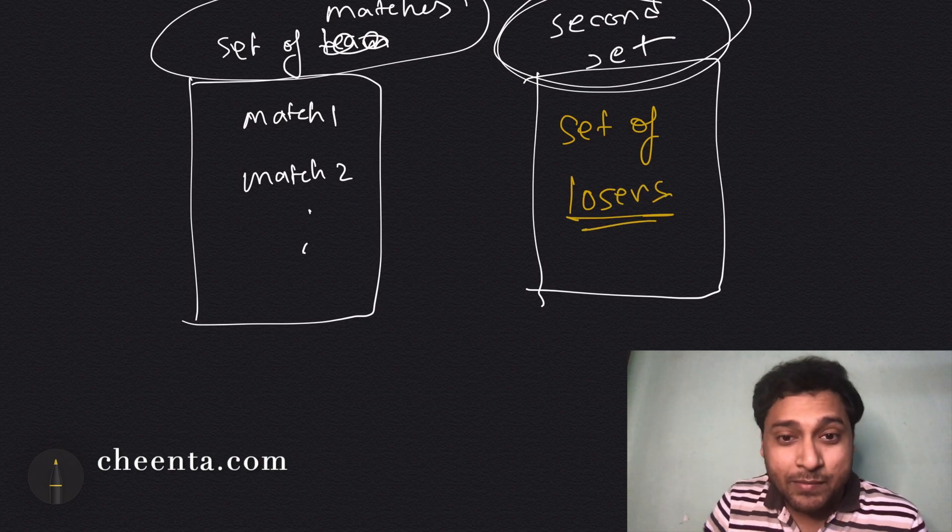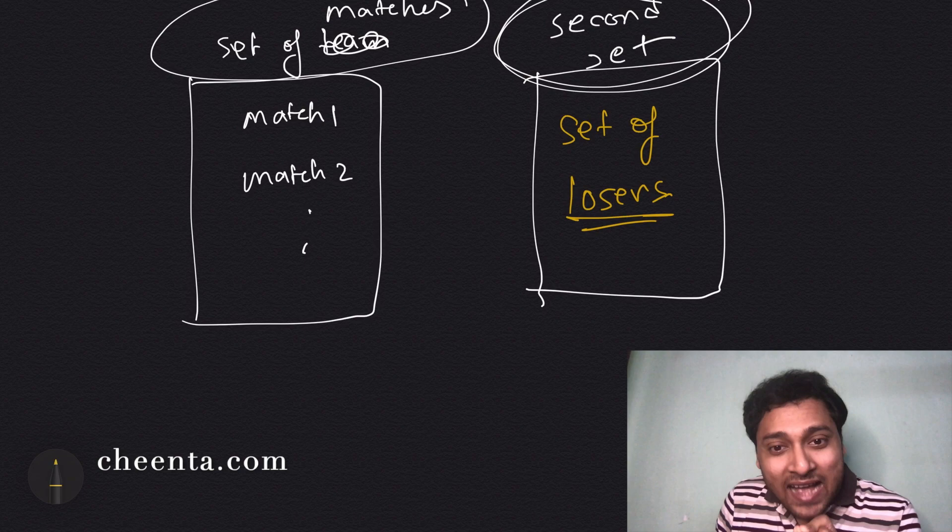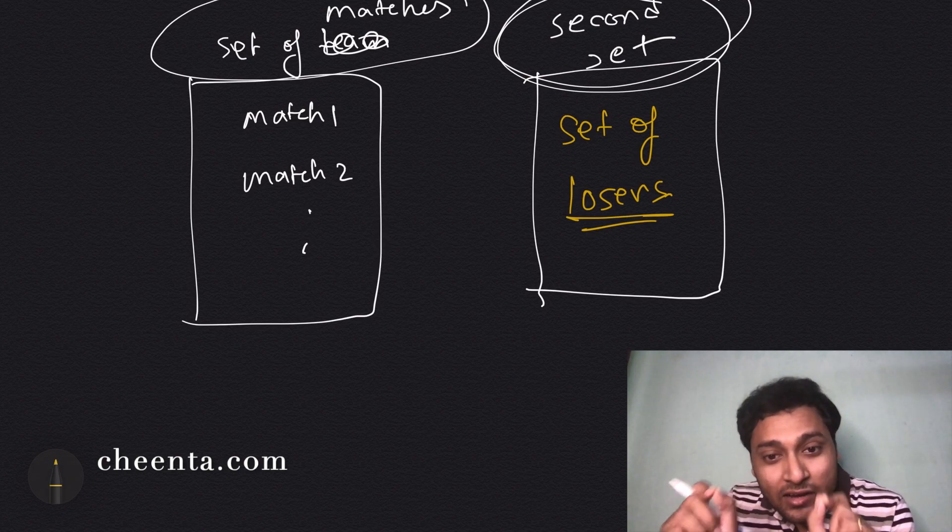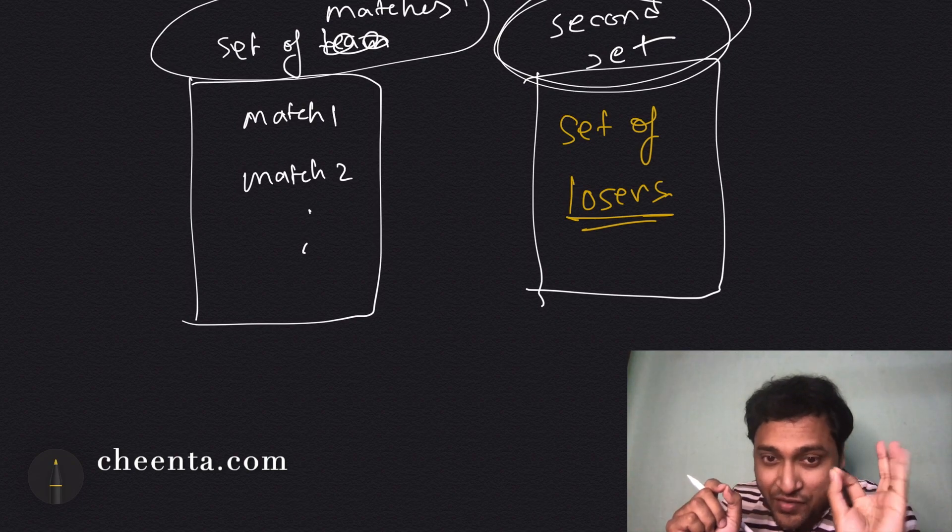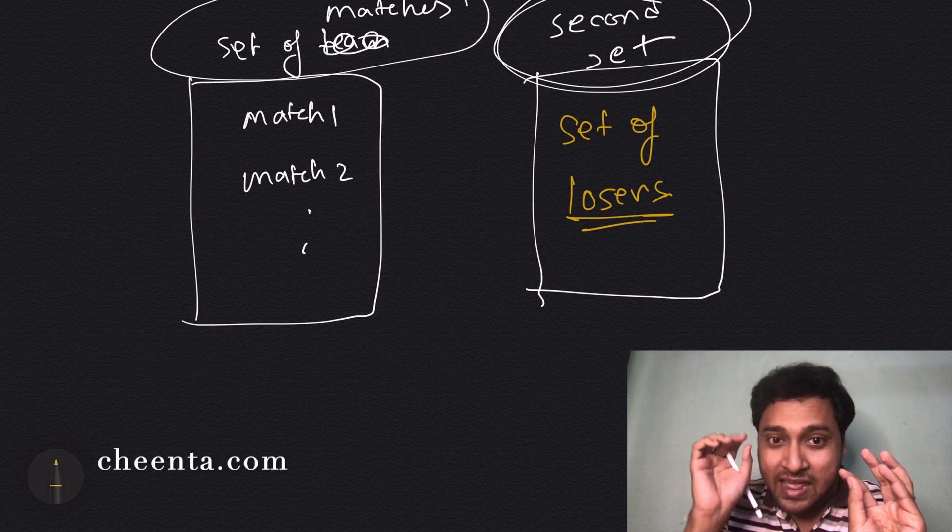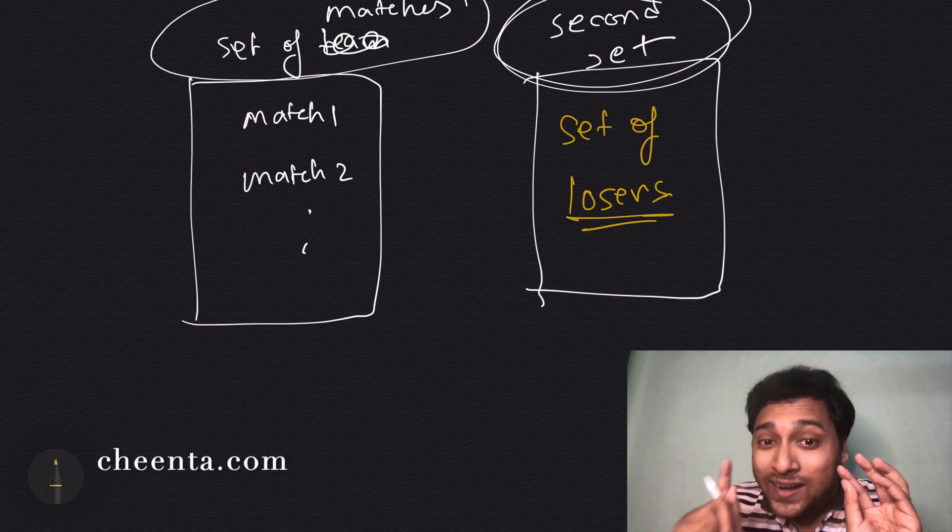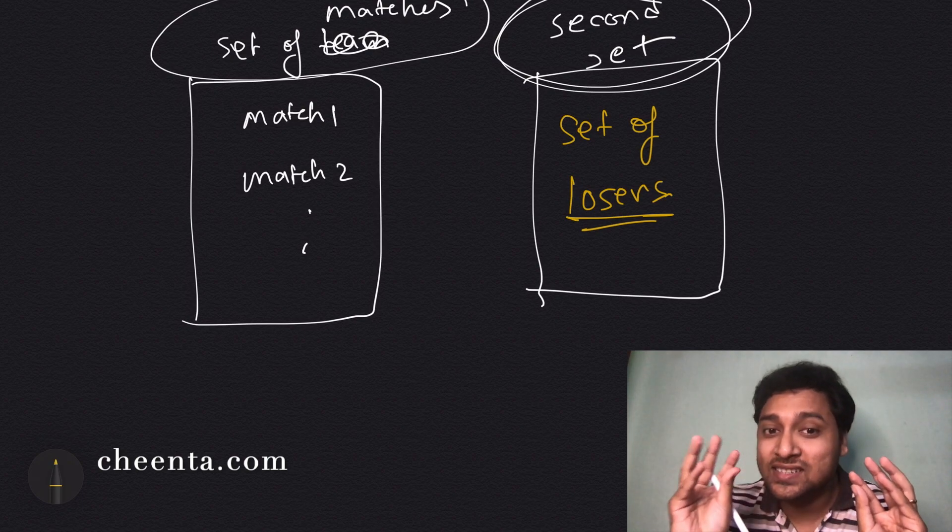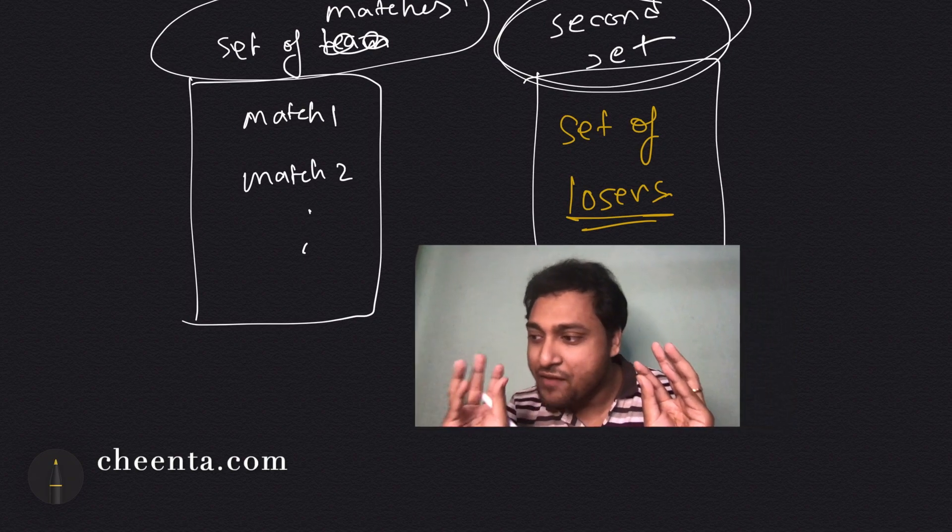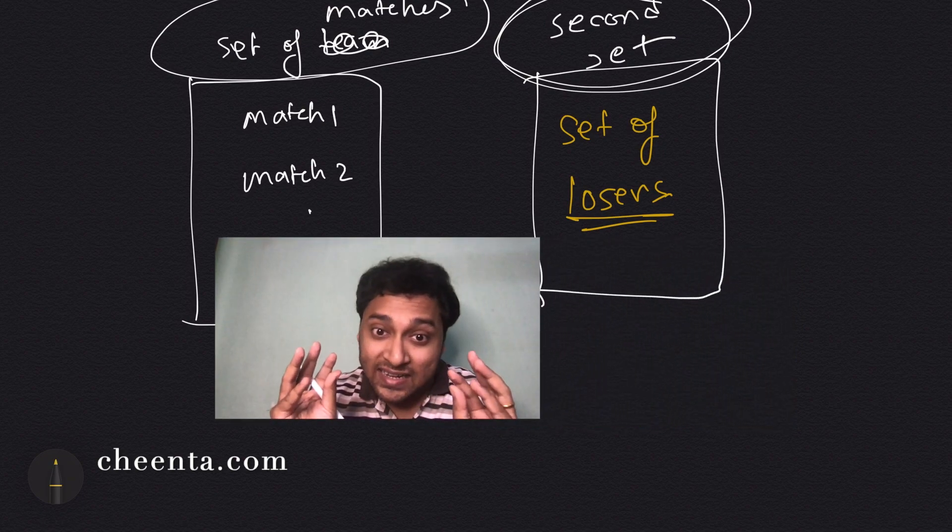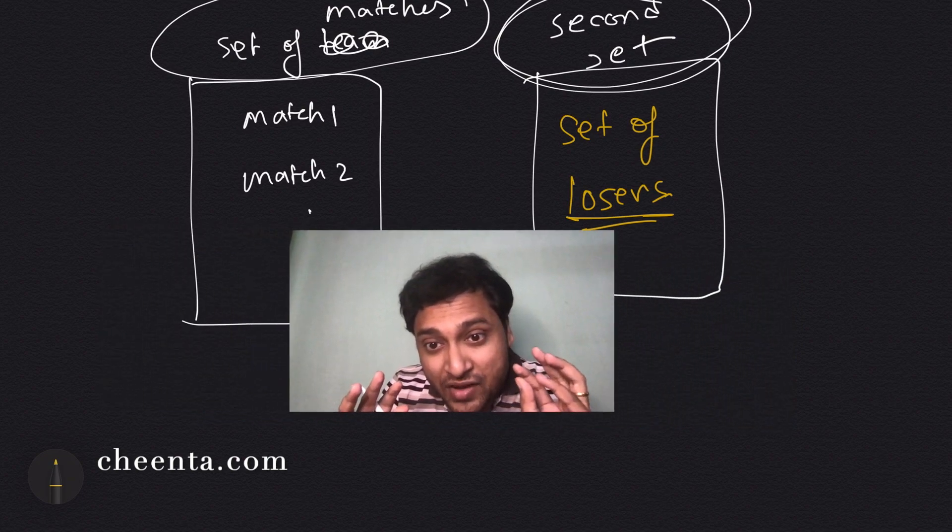What do I mean by that? Because every match will have a corresponding loser. Think about it: if I give you a match, you can tell me precisely one team which lost that match. That's the one-to-one onto mapping. For every loser there is a match that it has lost, and for every match there is a loser of that particular match.